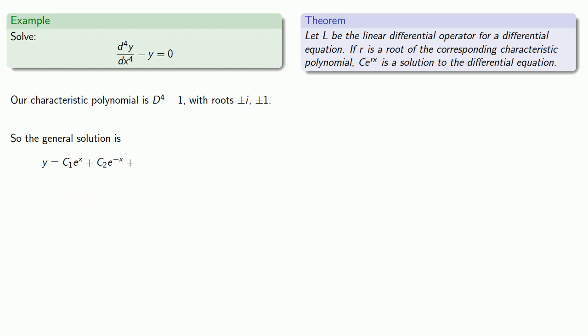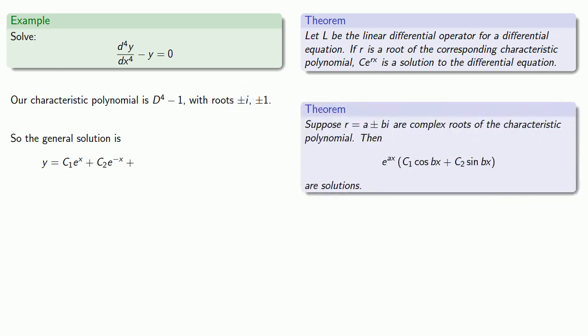Meanwhile, the two complex roots, plus or minus i, those will give us trigonometric solutions. So remember that any pure imaginary number bi can be written as 0 + bi, so our solutions will look like e^(0x) times (c₃*cos(x) + c₄*sin(x)).